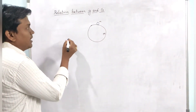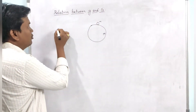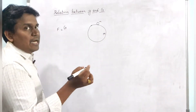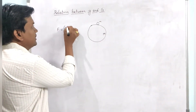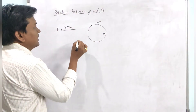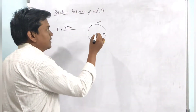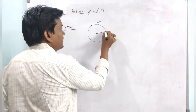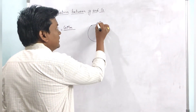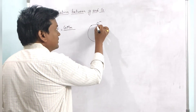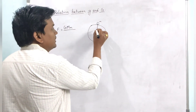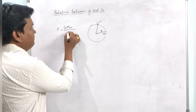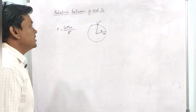From Newton's law of gravitation, the force between the two masses is F equal to capital G times the product of the masses, capital M and small m. Coming to the distance, the distance between the two masses — from the center of capital M to the center of small m — is approximately equal to capital R. So that gives F equal to GMm by R square.